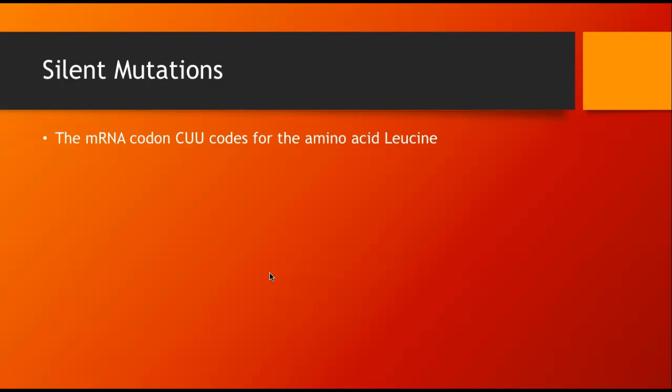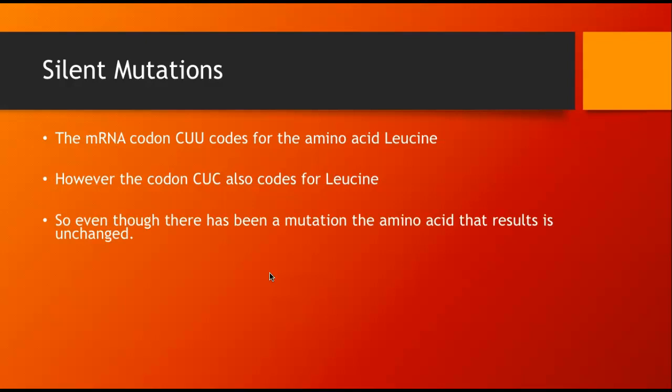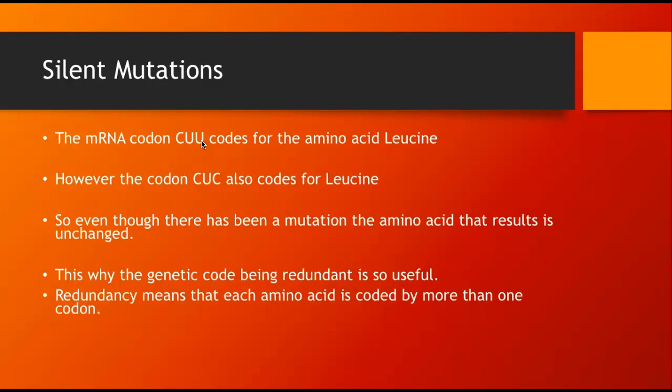Silent mutations, how that works is, remember when I talked about codons, there could be more than one codon coding for the same amino acid? Well, that means the genetic code is redundant. There are more codons that can be used for multiple amino acids. So the mRNA codon CUU codes for amino acid leucine, but the codon CUC also codes for leucine. And so you can see there that even though there's been a mutation, or you could potentially change the U for the C or the C for the U, there's really not going to be any change in the overall result of the protein that you make, because that amino acid will still be leucine.